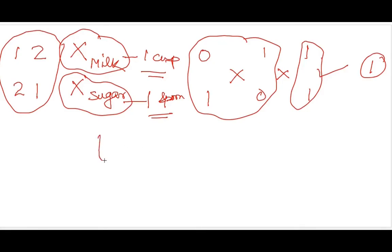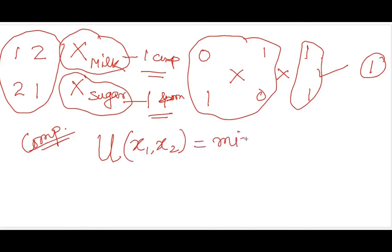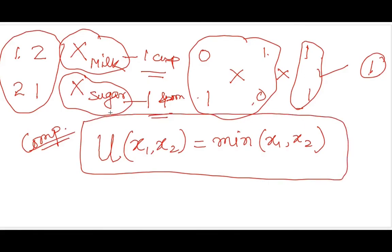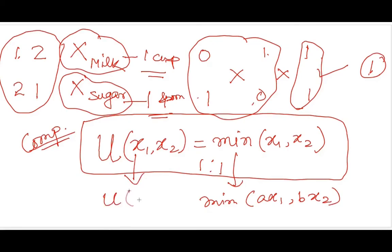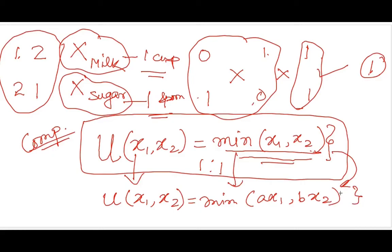Combining all these cases in functional form, the utility for complements can be written as minimum of x1 and x2. Because minimum of (1,2) is 1 — one cup of tea; minimum of (2,1) is 1; minimum of (1,1) is 1; minimum of (0,1) is 0; minimum of (1,0) is 0. This is the utility function for complements assuming a one-to-one ratio. For a different ratio I can modify it to minimum of (ax1, bx2), similar to what we did for substitutes.